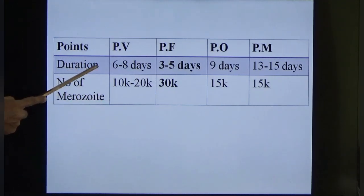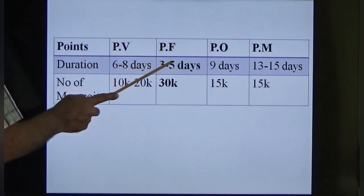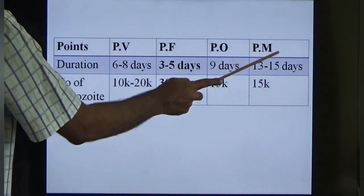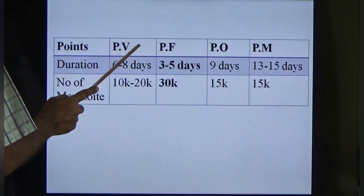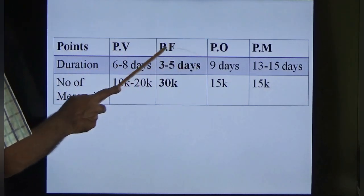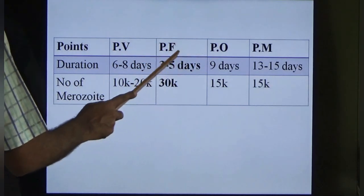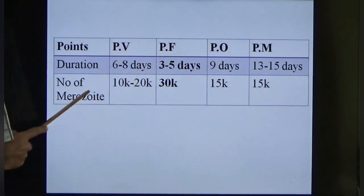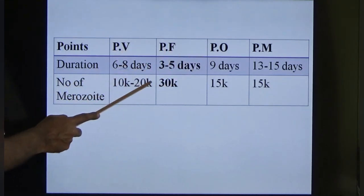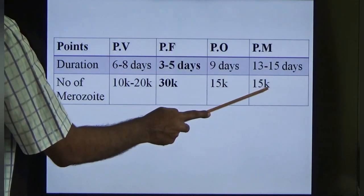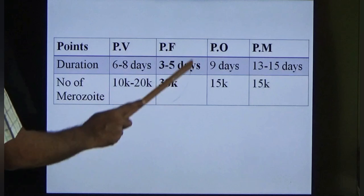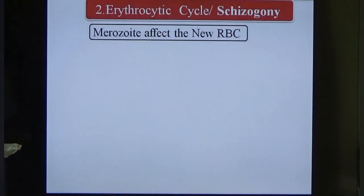Things to remember about pre-erythrocytic cycle duration: falciparum takes only 3 to 5 days (others take longer — malariae up to 15 days; falciparum only 6 to 8 days). Number of merozoites produced: vivax and malariae produce 10,000 to 15,000 each, but falciparum produces 30,000 merozoites — one reason falciparum is so dangerous.